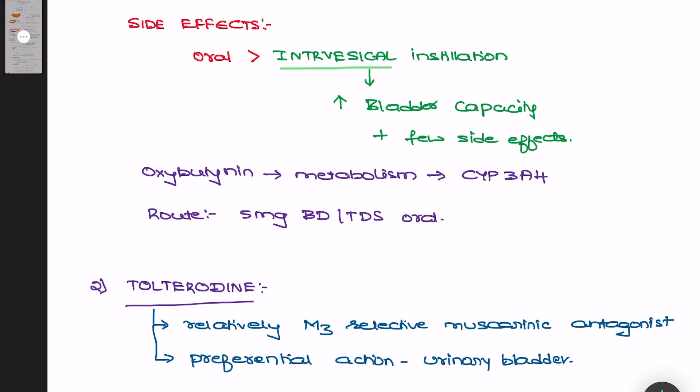Regarding the side effects of oxybutynin: when given through oral route, the side effects will be somewhat more compared to oxybutynin administered through intravesical instillation. Intravesical instillation also increases the bladder capacity to retain urinary volume and causes lesser side effects than oral oxybutynin. Also remember that oxybutynin is metabolized through CYP3A4, so if the patient is on CYP3A4 inhibitors like ketoconazole, you need to reduce the dose of oxybutynin.